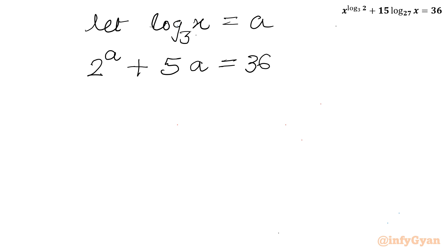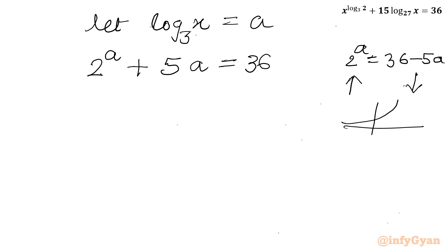If I graph this equation, I can write 2 power a equal to 36 minus 5a. The left-hand side is an exponential function, which is monotonic increasing in nature. The right-hand side is a line, which is a monotonic decreasing function in the form y equals negative mx plus c. Once I plot it, I will get at most one intersection point, and that is the solution we are looking for.